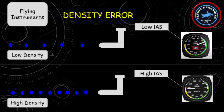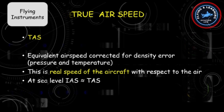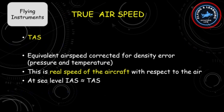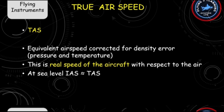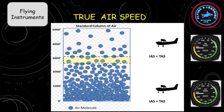True Airspeed, commonly known as TAS, is the airspeed corrected for density error. This is the real speed of the aircraft with respect to the air. At sea level, indicated airspeed is equivalent to true airspeed.